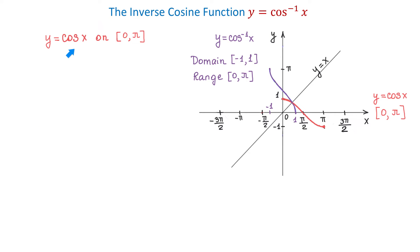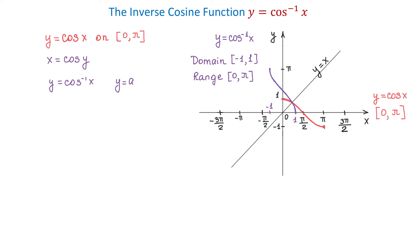Here again we have the cosine function restricted on the interval from 0 to pi. To write the inverse cosine function we need to interchange or swap x and y — in place of y we write x, and in place of x we write y. We then solve for y, and for this we have two notations: one is y equals inverse cosine of x, and the other is y equals arc cosine of x. Both notations are widely used in different textbooks.